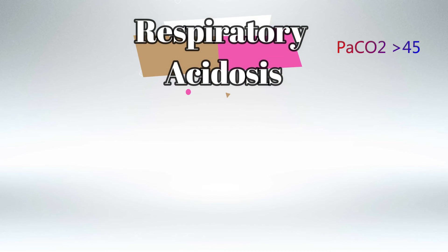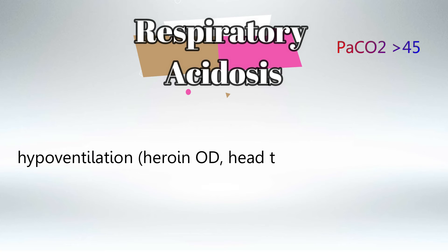Respiratory acidosis is defined as pressure of arterial carbon dioxide more than 45. We see this in hypoventilation, because if you're not breathing enough, carbon dioxide levels in the body will accumulate instead of being expelled.